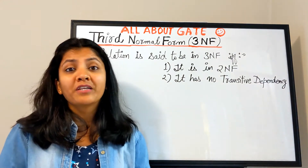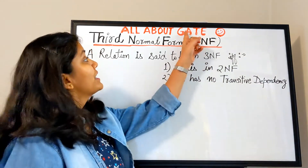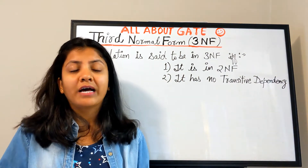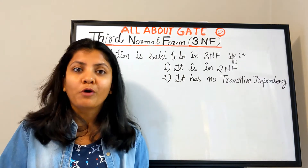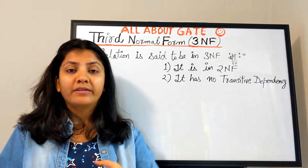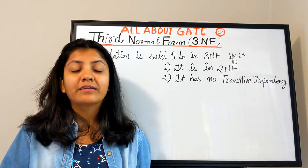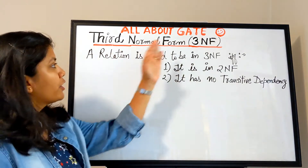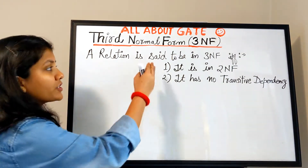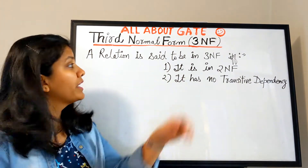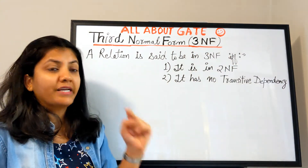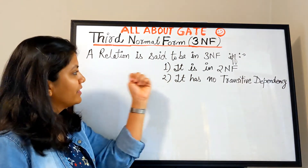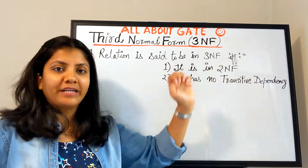Welcome to the YouTube channel where we talk all about GATE. We are studying DBMS and we have started normalization, having covered the first normal form and the second normal form. Now we are here to understand the third normal form. A relation is said to be in third normal form if and only if it satisfies two conditions. The first condition is that it must already be in second normal form.